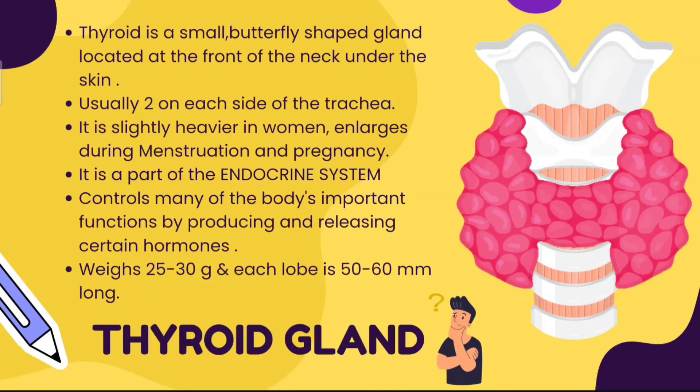The thyroid gland is a small butterfly-shaped gland located at the front of the neck under the skin, usually two lobes on each side of the trachea. It is slightly heavier in women and enlarges during menstruation and pregnancy. The thyroid gland is part of the endocrine system. It controls many of the body's important functions by producing and releasing certain hormones. It weighs about 25–30 grams and each lobe is 50–60 mm long.